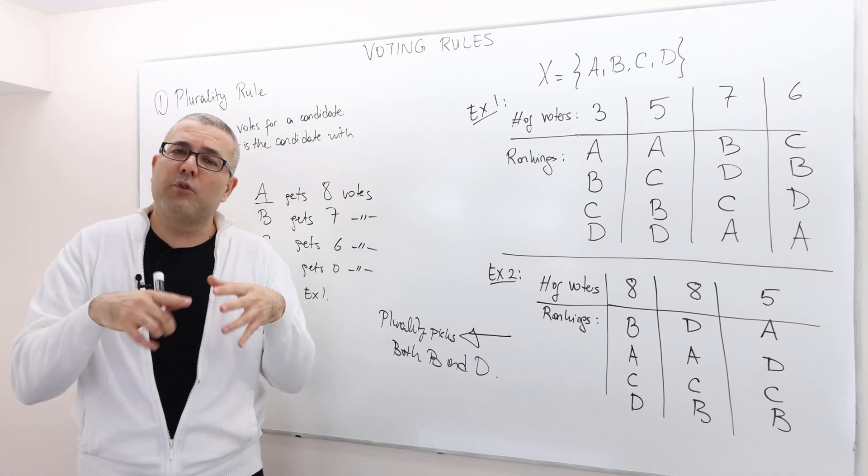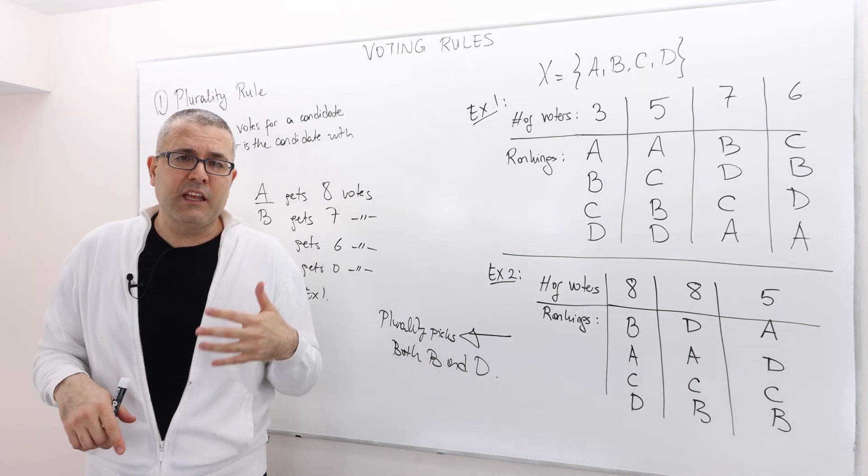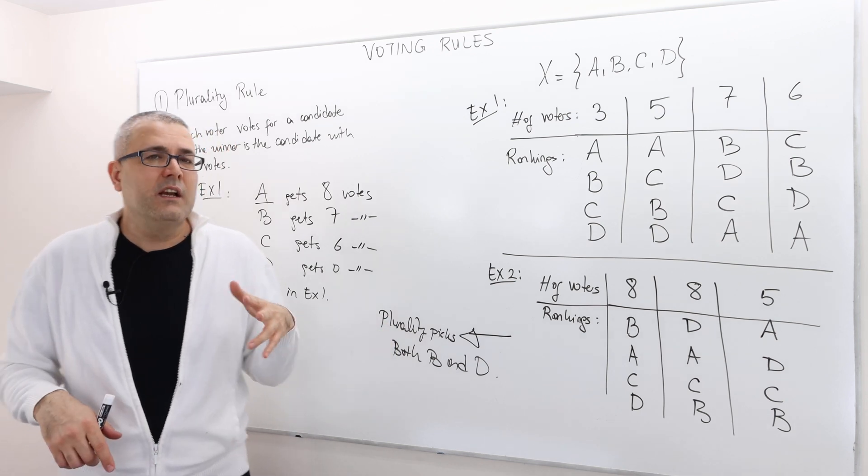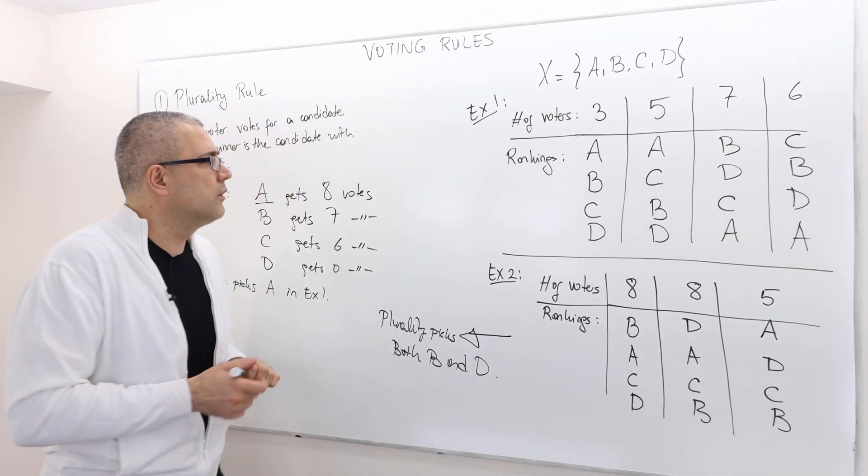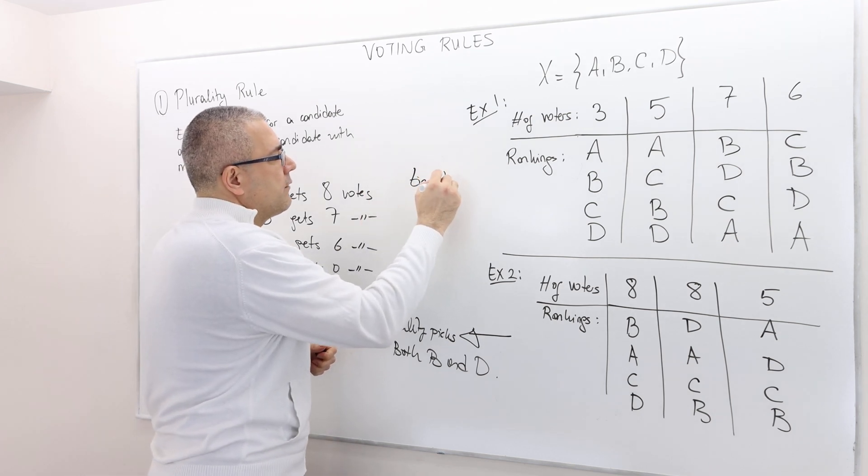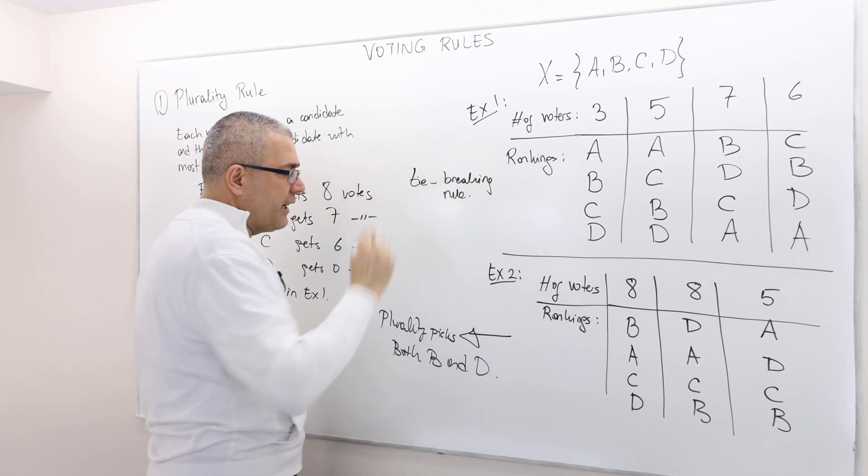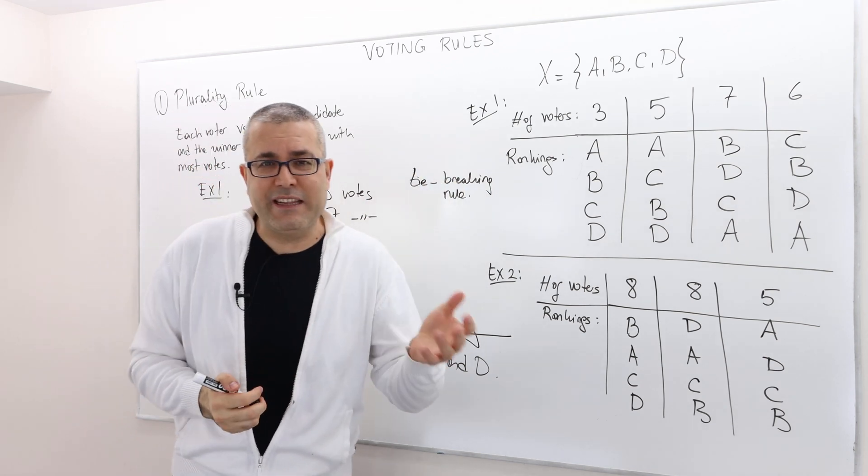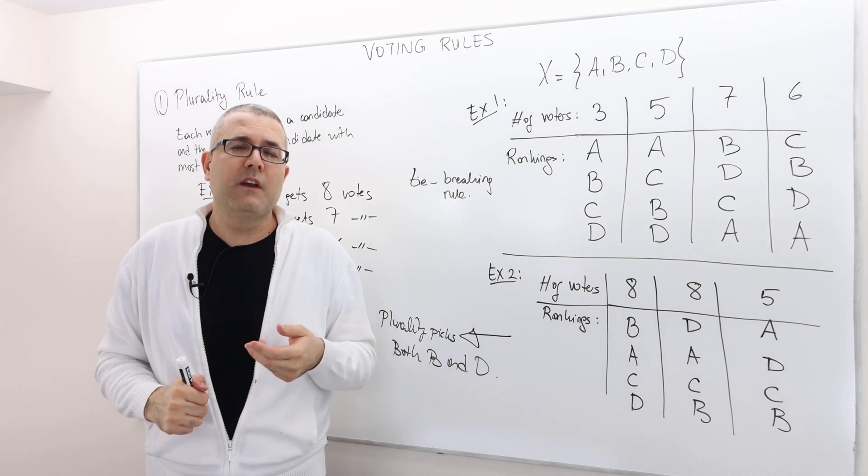But in cases where the voters are actually voting a smaller number of alternatives, and the number of voters is small, then, usually, in reality, people actually use a tie-breaking rule. Tie-breaking rule, such as they say, obviously, they describe this before the voters vote, and they say, well, if there's a tie between more than one candidate,